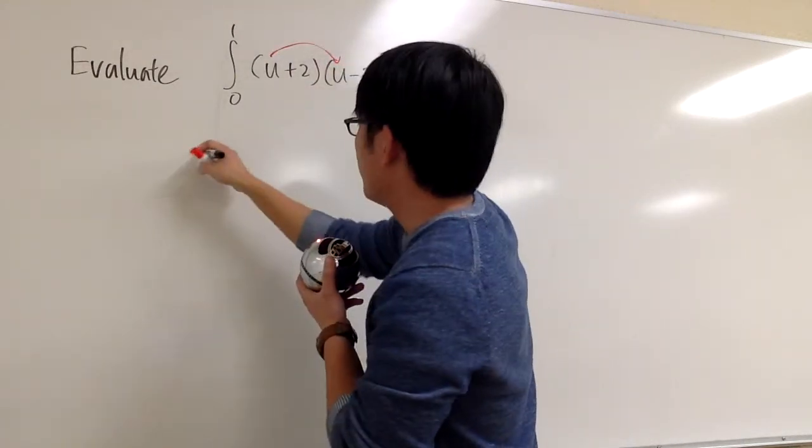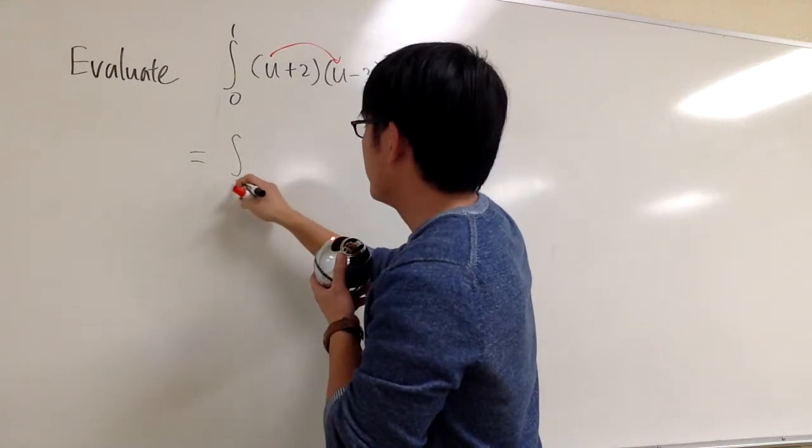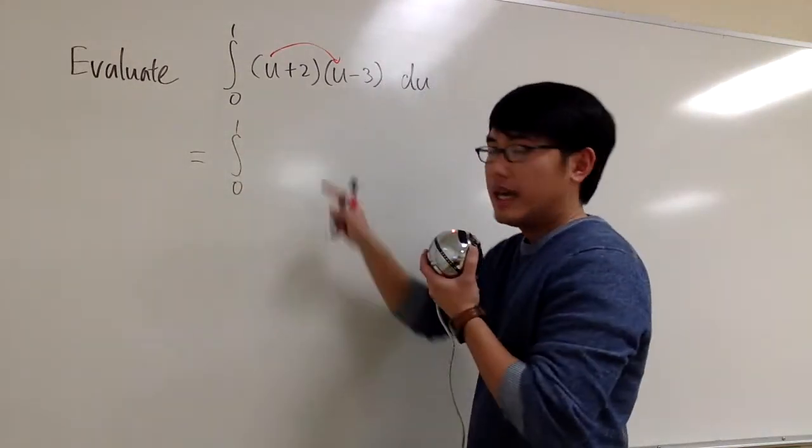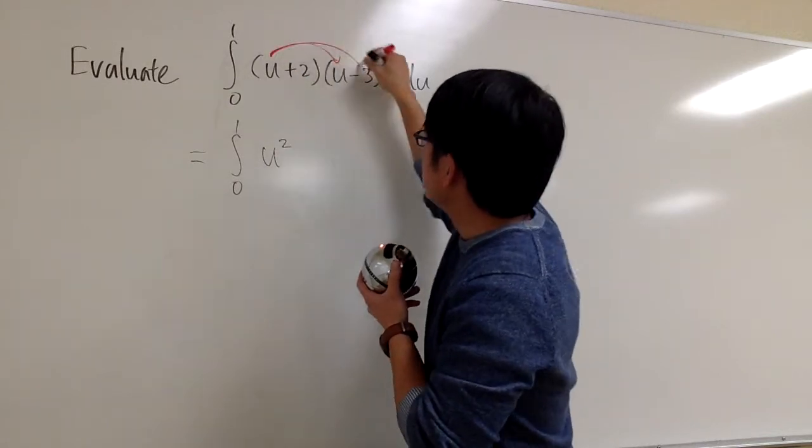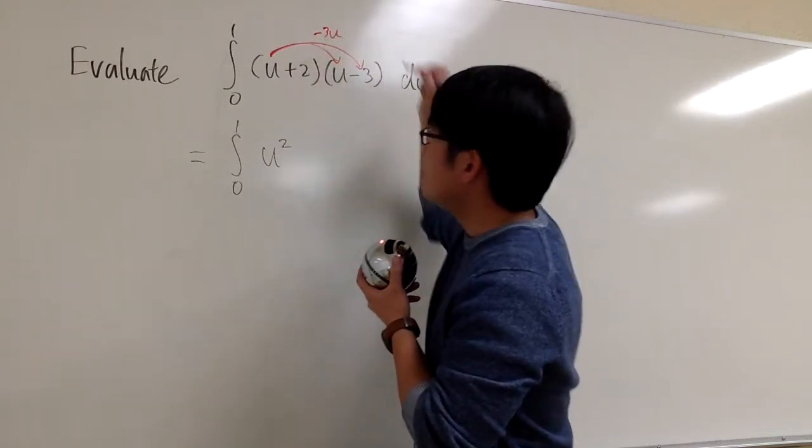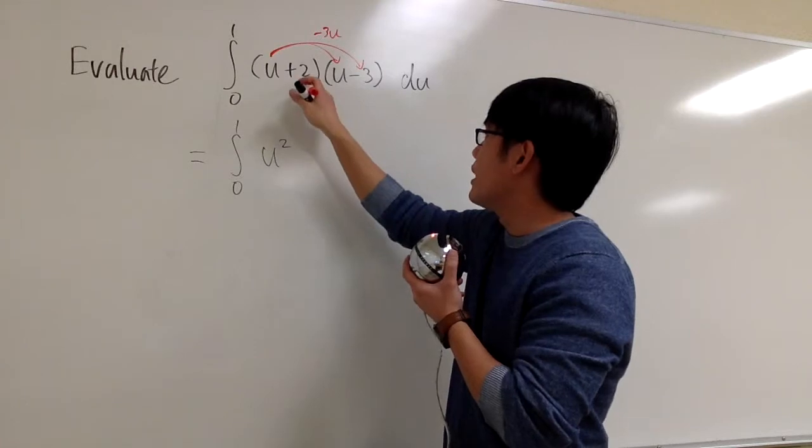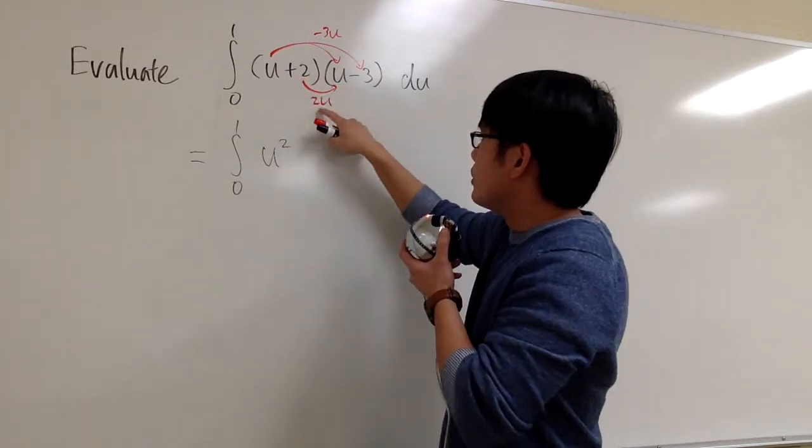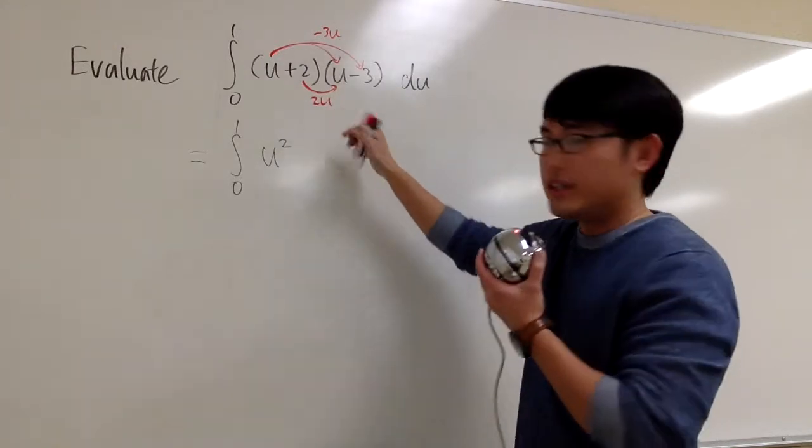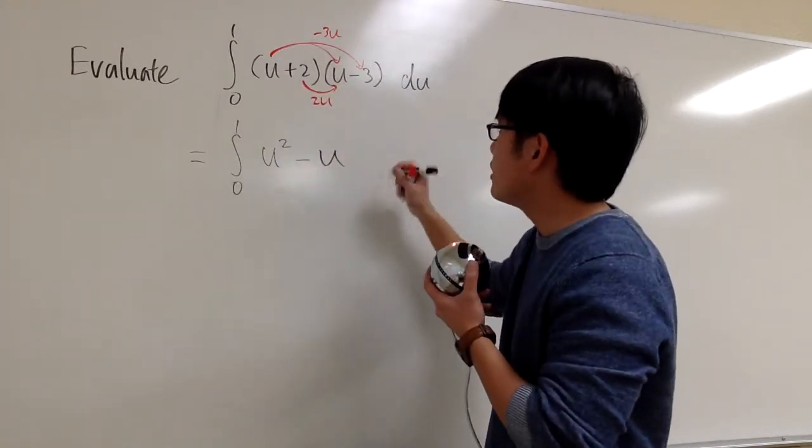So I'll just do a usual foiling. We still have the integral from 0 to 1, and u times u is, of course, u squared, and I take u times negative 3, that's negative 3u, and we will get 2u from here, so positive 2u. Negative 3u combined with 2u, we get negative u, so we have minus u right here.